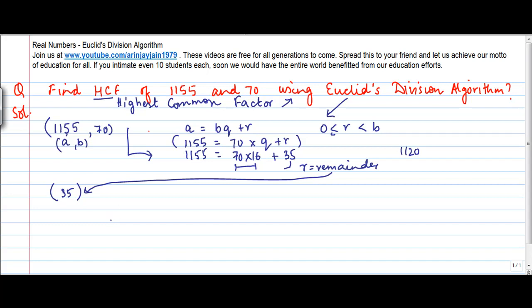So you are left with 35, and the divisor, basically the 70 which was here, becomes the number. So what you do is you first break up these two numbers into Euclid's Division Algorithm. Once you have done this, then you put in the number which is basically b here, and the remainder becomes the second number.